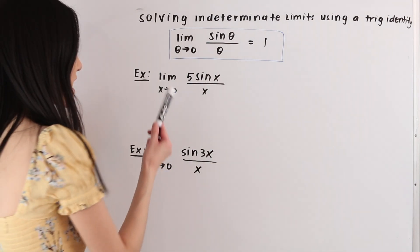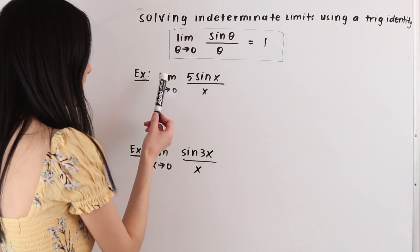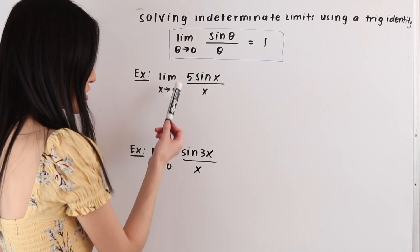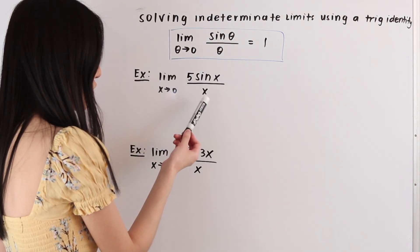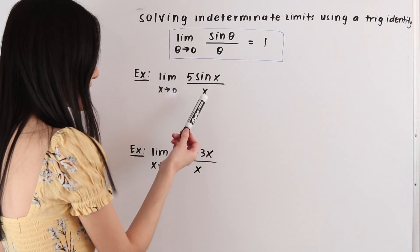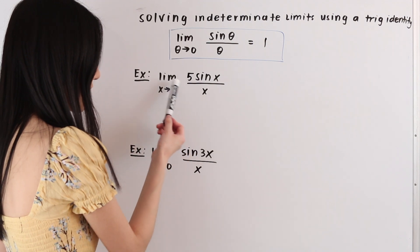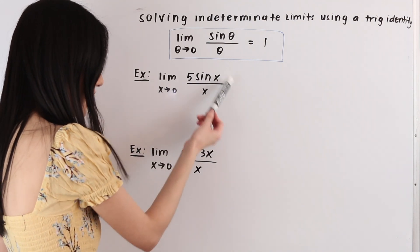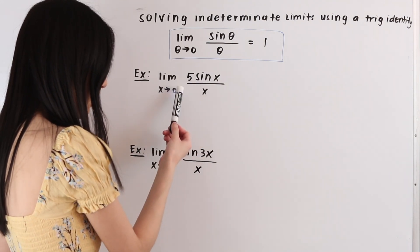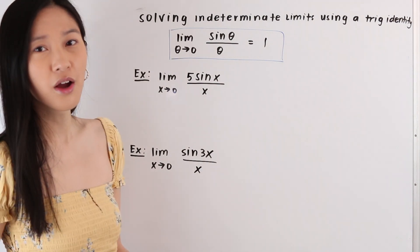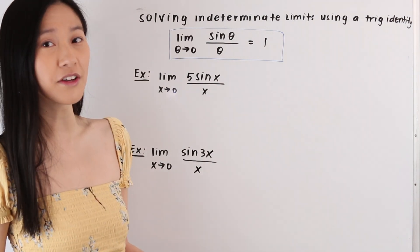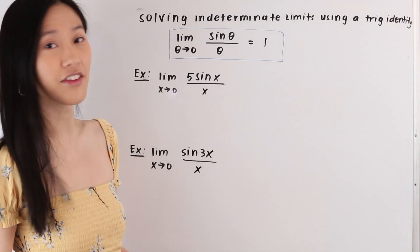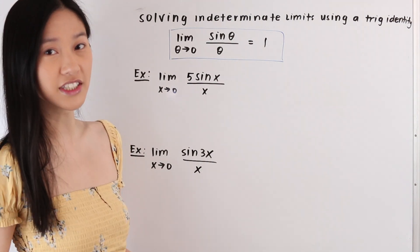In this first example we have the limit as x approaches zero of the function five times sine of x over x. We see that if we plug in this value for x in our function f of x we get zero over zero, which is an indeterminate form, which means that we need to use another method to solve this limit.